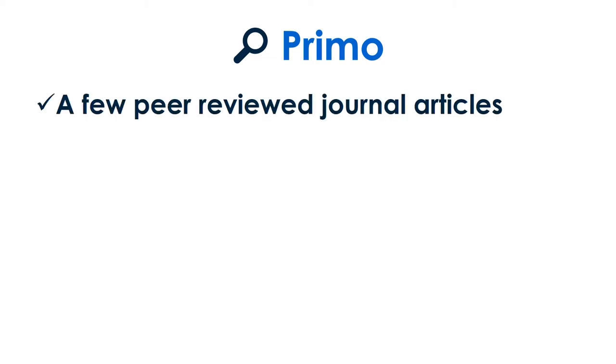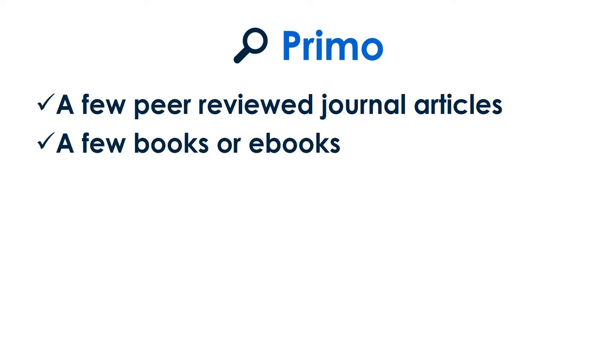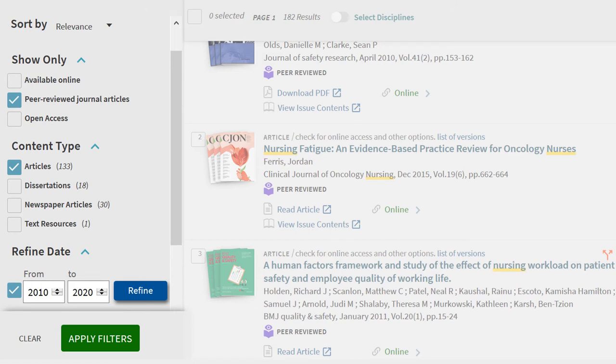We'll cover two options: Primo and library databases. Primo is the library search tool and catalog. Use Primo when you only need a few journal articles or books, or when looking for a specific journal title. The most common requirements for your assignments are also popular filters in Primo: peer reviewed, content type, and creation date.